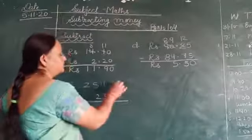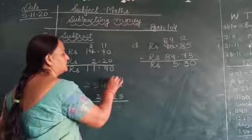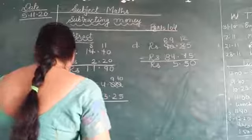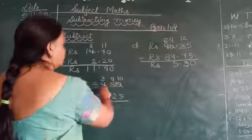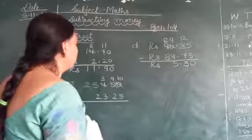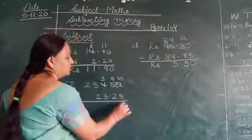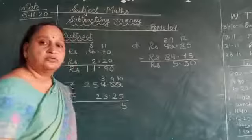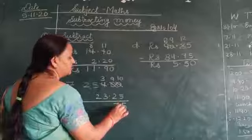On top we have 0, and below we have a number. So we have to make this 10. This will become 9. And we have to borrow from this also, because this is 0. We have to borrow from this too.